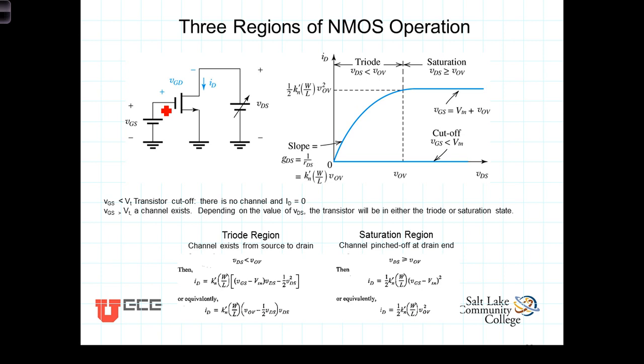When VDS is less than the overdrive voltage, the transistor is said to be in the triode region. A channel exists from the source to the drain but is not yet pinched off. In the triode region, the current I sub D can be calculated from either of these two equivalent formulas.